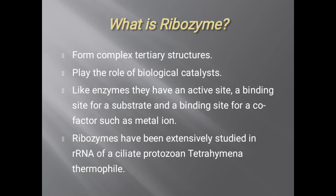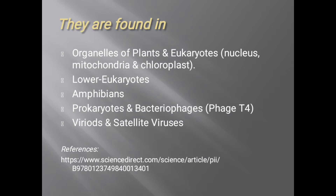Ribozymes have been extensively studied in RNA of the ciliate protozoan Tetrahymena thermophila. They are found in organelles of plants and eukaryotes, including nucleus, mitochondria, and chloroplast. They are also found in lower eukaryotes, amphibians, prokaryotes, and bacteriophages, viroids, and satellite viruses. Viroids are the smallest plant pathogens, while satellite viruses are very small viruses that coat their own coat proteins and depend on a helper virus for replication.